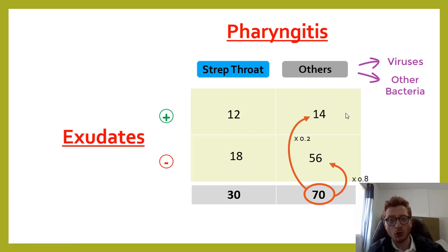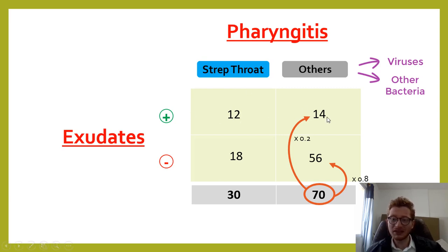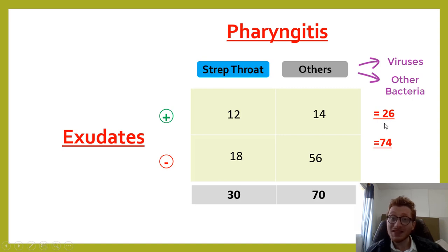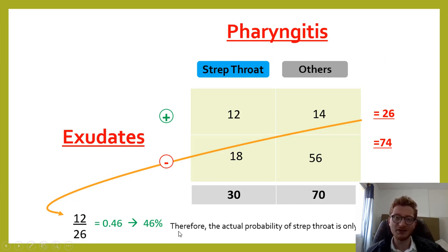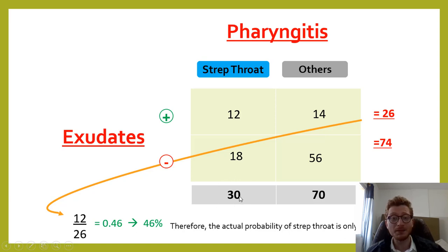Given that our patient has exudates and a sore throat, what is the probability that he has strep throat? We add 12 plus 14 to get 26 people with exudates. Of those, only 12 are actually strep cases. So 12 divided by 26 gives us 46 percent. The actual probability of our patient having strep throat is only 46 percent — up from the baseline of 30 percent.